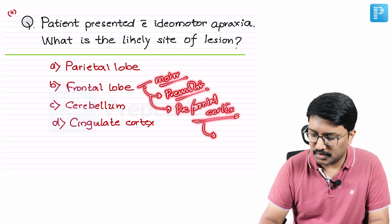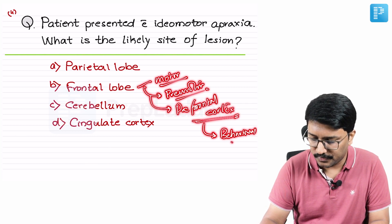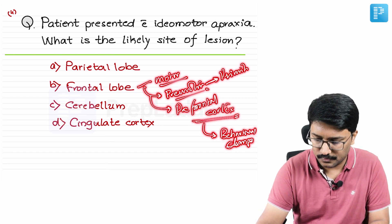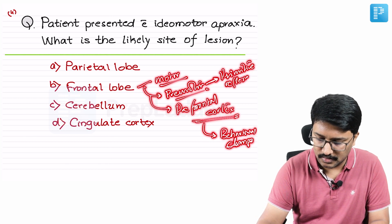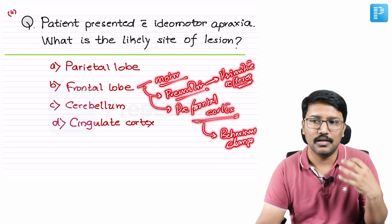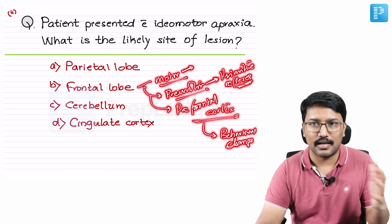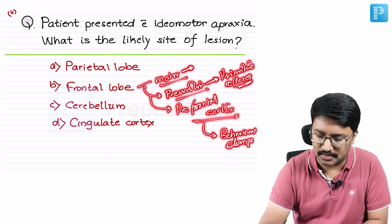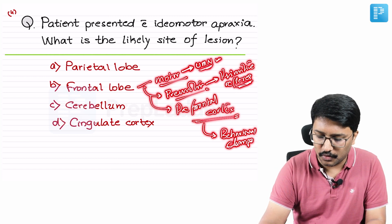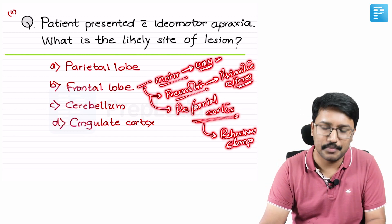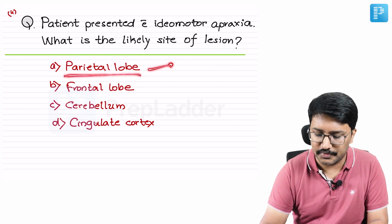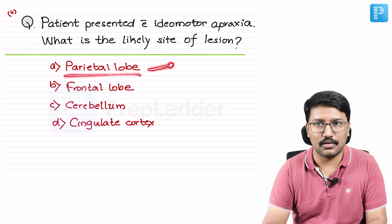A prefrontal cortex lesion presents with behavioral changes. A premotor area lesion may show primitive reflexes and severe truncal rigidity — truncal muscles are more profoundly represented in the premotor area. The motor area presents with classical upper motor neuron hemiparesis. The frontal lobe also has Broca's area, so Broca's aphasia may be present. These are pointers to localize to the frontal lobe.